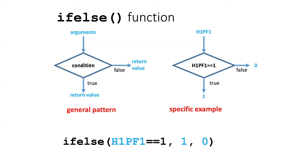So in this specific example, we have a variable called H1PF1, and the condition that we're checking is whether that variable is equal to one or not. So we pass in the vector H1PF1, then for each value we check whether it's equal to one. If that value is equal to one, if that condition is true, then we assign it a value of one. If it is not equal to one, then we assign it a value of zero.